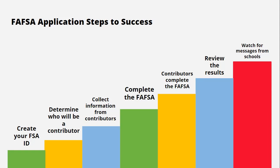Step three is collecting information for contributors. If you need contributors on your FAFSA, they will need to make their own FSA IDs. Step four is completing the FAFSA — the student will complete their portion and invite contributors to submit their information. Step five, contributors complete the FAFSA by receiving the invitation email and putting their information in. Step six, review the results once all contributors have completed their section and the FAFSA is submitted. Step seven, watch for communication from schools — they will contact you about verification or other processes that may need to be completed before awarding your aid, or they may have an offer ready for you to review and accept.